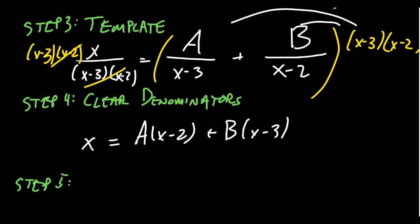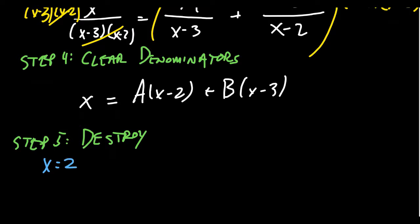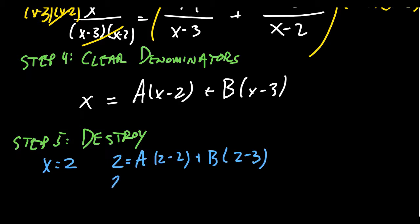Step 5: we're going to plug in annihilating values of x — values that make the original denominators go to 0. Now that we've cleared the denominators, there are no more denominators, so we can safely do this. For example, plug in x equals 2. That gives us 2 equals A times (2 minus 2) plus B times (2 minus 3), which simplifies to 2 equals 0 times A minus B, so 2 equals negative B, meaning B equals negative 2.